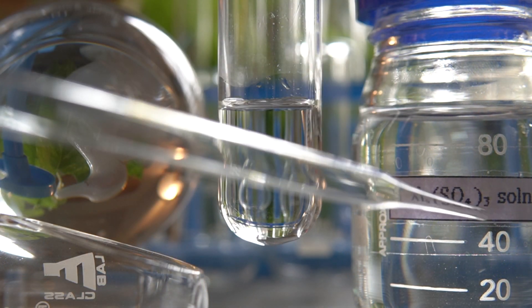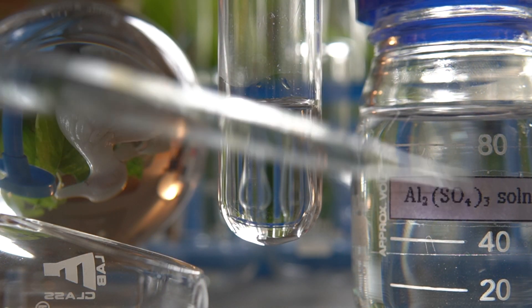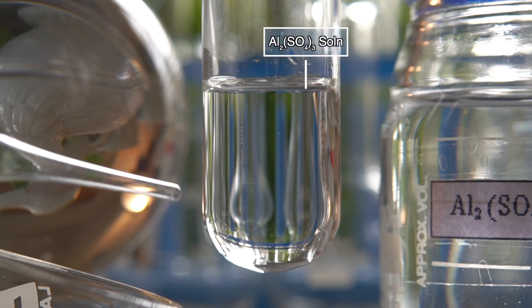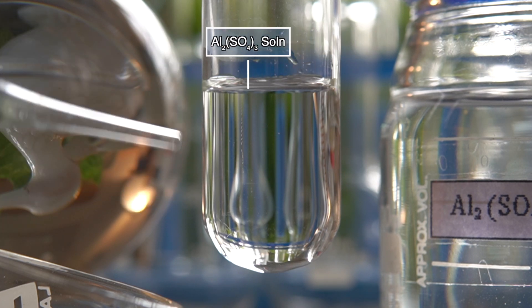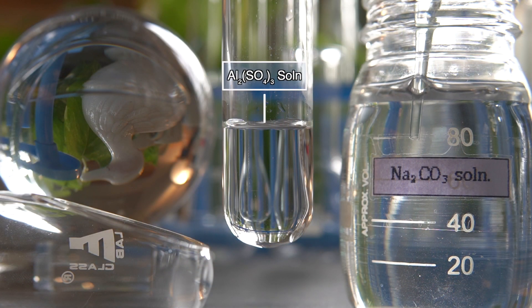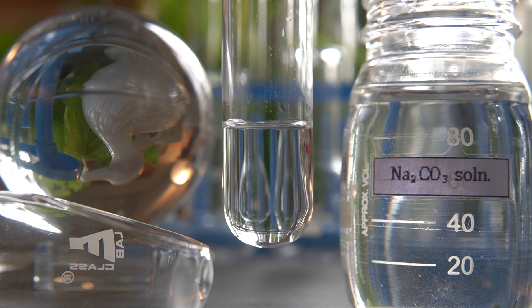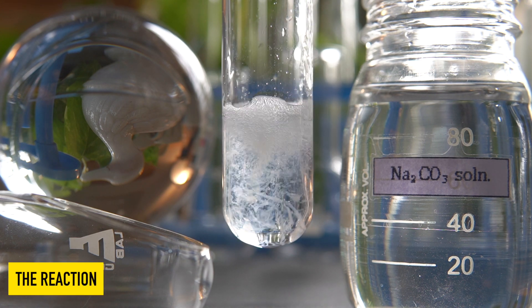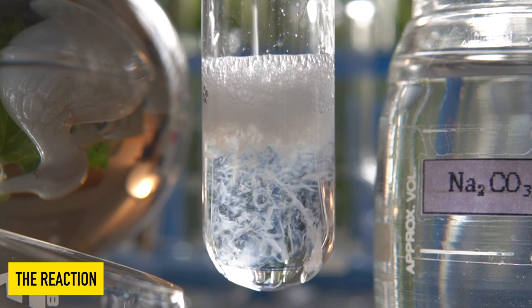Now to initiate the chemical reaction, we will take some clear solution of aluminum sulfate into this test tube. Now we will add the clear solution of sodium carbonate dropwise onto the aluminum sulfate solution and observe the effects.